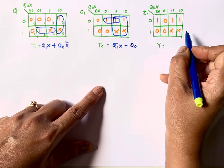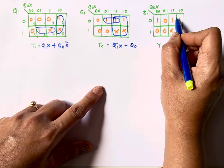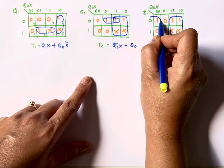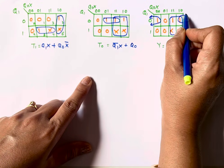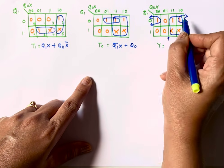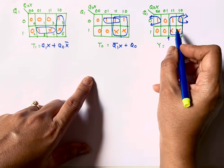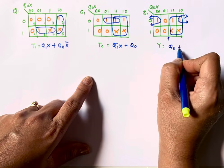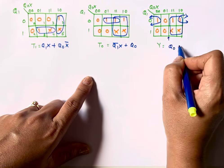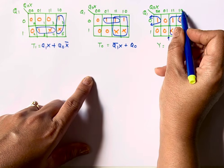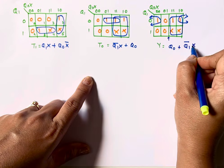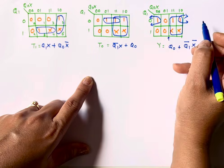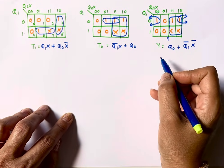For T0 I make one group of four and one additional pair. The equation for the quad is Q1̄ (Q1=0 throughout), plus for the pair it is Q0. So T0 = Q1̄·X + Q0. For Y I make one quad and one overlapping pair — folding the K-map, the quad gives Q0 and the pair gives Q1̄·X̄. So the equation for Y is Q0 + Q1̄·X̄.